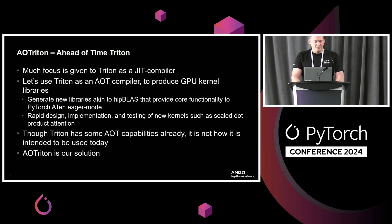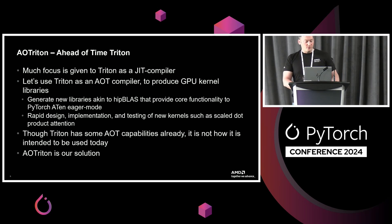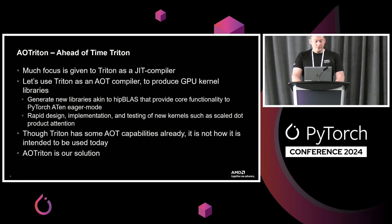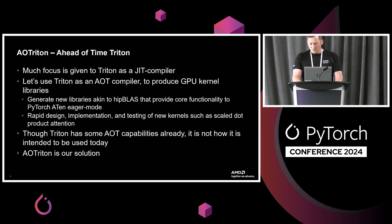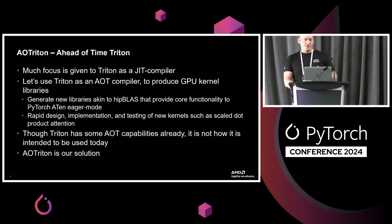So much focus is given to Triton as a just-in-time compiler — examples such as flex attention, Torch Compile, AOT Inductor, and so on. Triton is a powerful tool that has shown great performance across various kernels underpinning cutting-edge models. We want to expand Triton's use case from just-in-time to ahead-of-time compilation. This has many benefits: we can use it to generate kernel libraries like AOTRITON, similar to hipBLAS — just a C++ library to execute on our GPUs — and use these libraries in PyTorch as part of how we deliver eager mode, as well as in other projects.